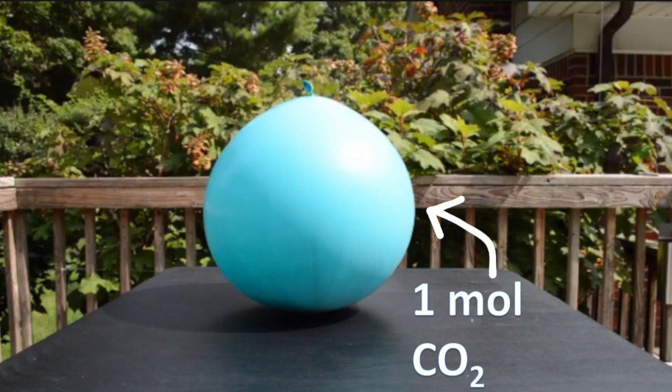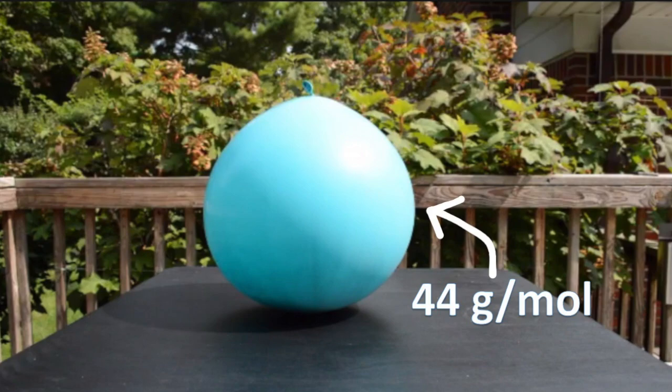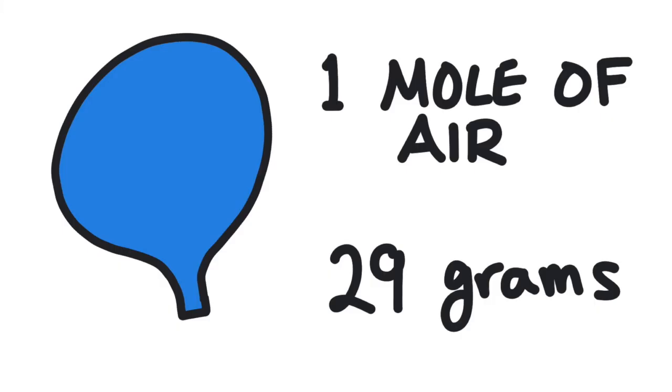Now by the way, CO2 is kind of heavy for a gas. A mole of CO2 has a mass of 44 grams. That's 44 grams per mole. And a mole of air has a mass of about 29 grams.